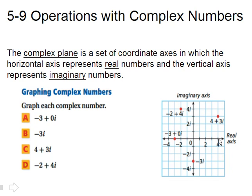The x-axis that we normally think of as the x-axis is now the real axis. So all the real numbers will go on this axis. And then the one we used to call the y-axis is called the imaginary axis. So all imaginary numbers go on there.